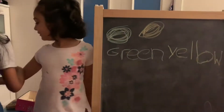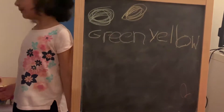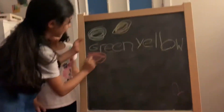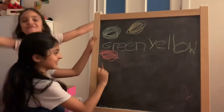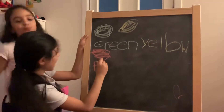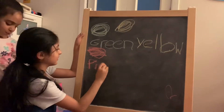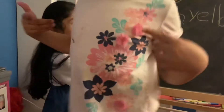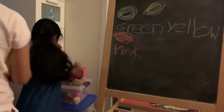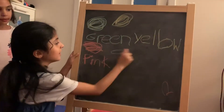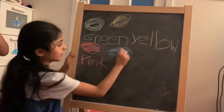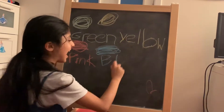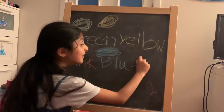Now we're going to do pink — Dahlia's favorite color! Daddy, she has pink on her shirt. I do have pink. So P, I, N, K. Now we have blue: B, L, U, E.